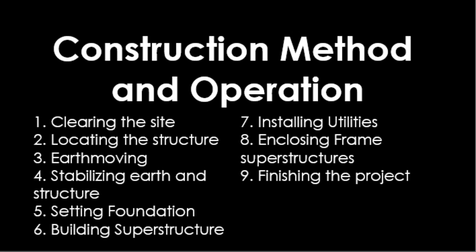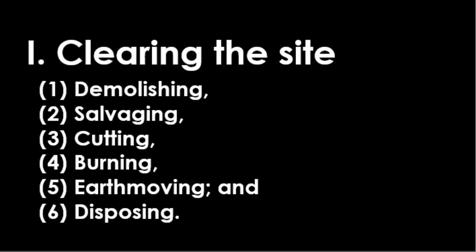Construction method and operation: we have nine methods. First, we have to clear the site. Second is locating the structure. Third is earth moving. Fourth is stabilizing earth and structure. Fifth is setting foundation. Sixth is building superstructure. Seventh is installing the utilities. Eighth is closing the frame superstructure. And ninth is finishing the project.